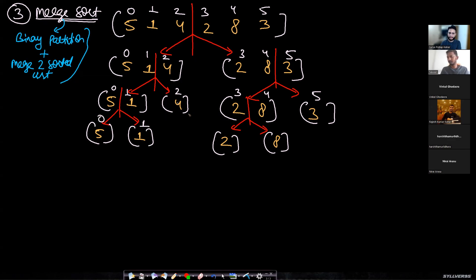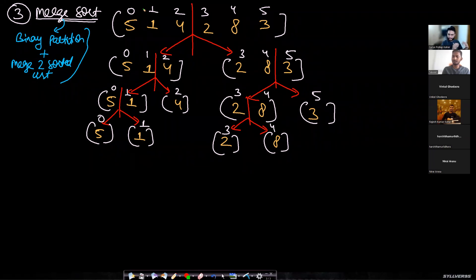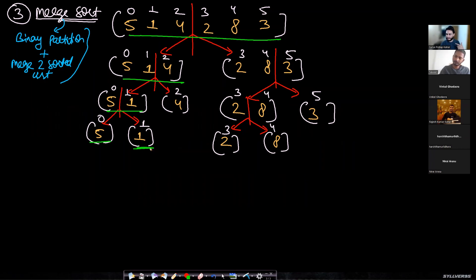Now we've done binary partition using recursion. The recursion flow first goes to the leftmost side, solves the leftmost sub-problem, moves back, then solves the right. If you're familiar with tree traversal, this is a post-order tree traversal — you go left, then right, then come back the third time and apply the logic of merging two sorted lists.